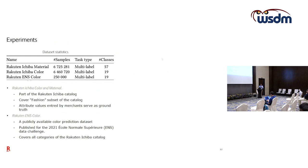I will present results on three internal datasets: Rakuten Ichiba Material, where the goal is to predict the material of a given item — for example cotton or leather — with 57 possible classes; Rakuten Color for color prediction; and Rakuten ENS, a dataset released for a competition at École Normale Supérieure in 2021. The main difference is that this last dataset is not focused on fashion but spans more categories across the Rakuten catalog.